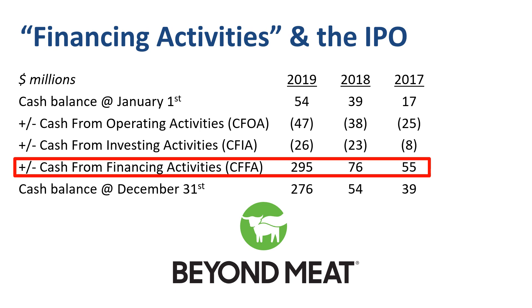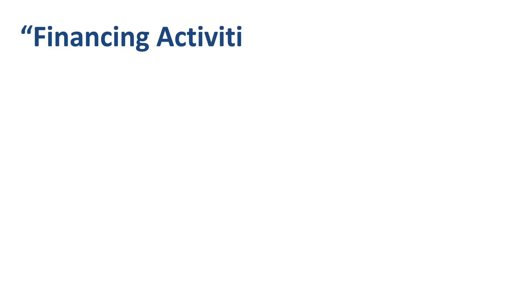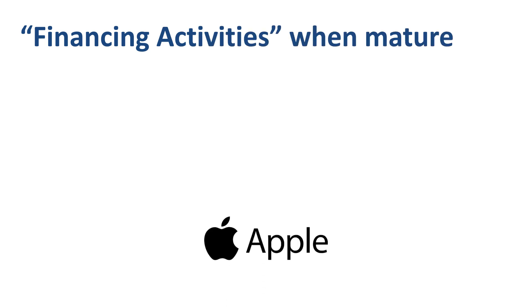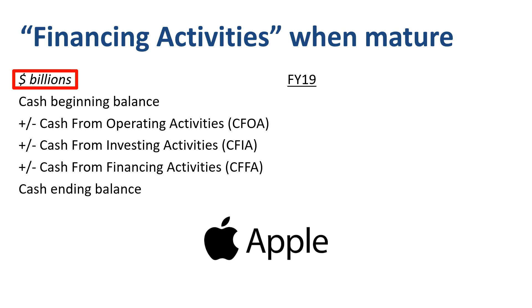The cash from financing activities section of the cash flow statement provides insights into a company's financial strength and changes in its capital structure. A fast-growing company like Beyond Meat, at this stage of its development, needed significant cash inflows from financing activities to offset the cash outflows in operating and investing activities. If a company is mature and successful like Apple, the cash flow statement looks very different — first of all, the unit of measurement is billions, not millions.